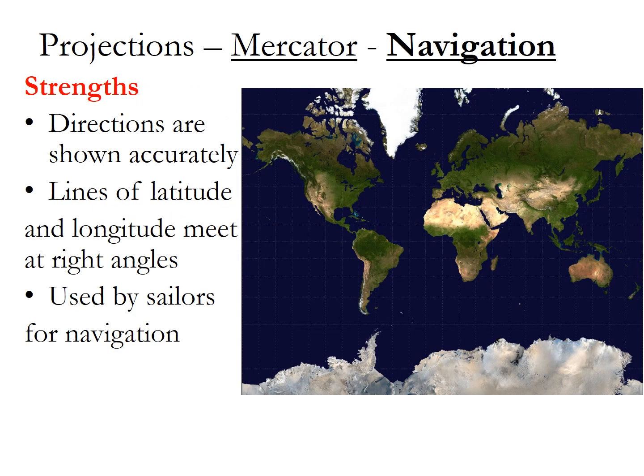Our first projection we're looking at is the Mercator projection. This is focused on mainly navigation. The strengths are the fact that the world is accurately drawn and it can be used for directions. This is the same projection that Google Maps uses because right turns are right turns on the map. Everything has right angles, and it's really clean and easy to read. All the lines of latitude and longitude are all at right angles, so it's very simple — you know where you're going.